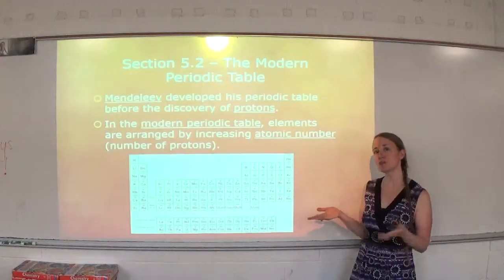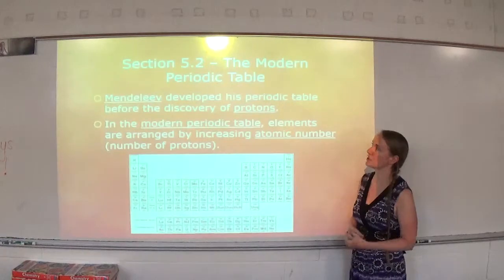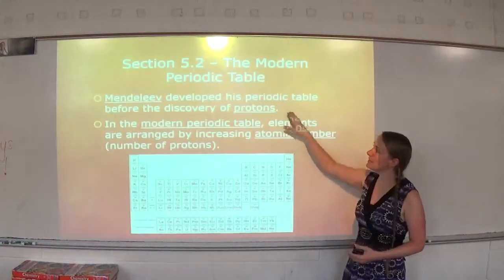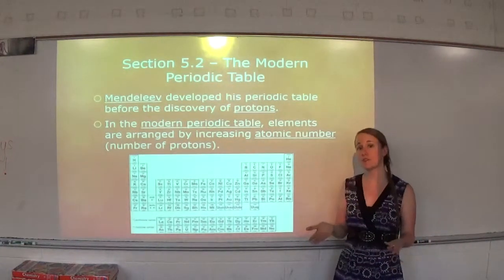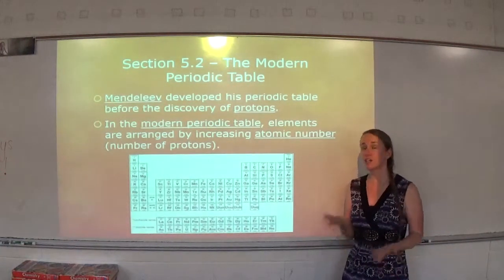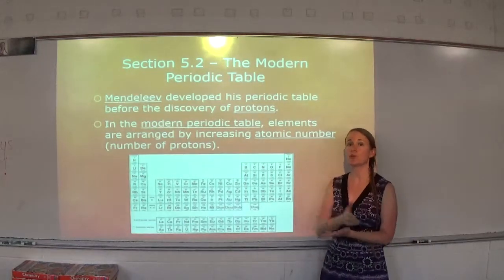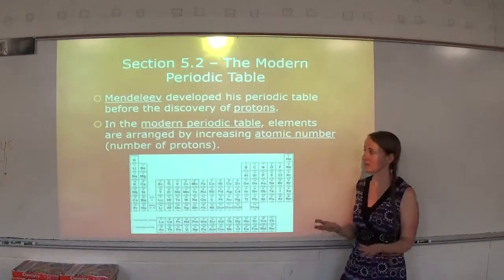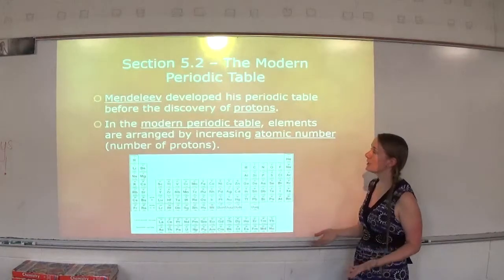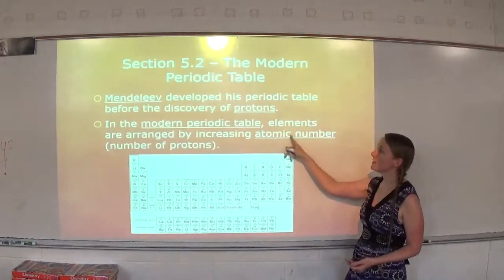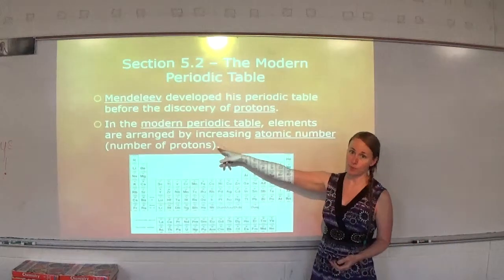There's a little bit of difference between the two, but they're pretty similar actually. Mendeleev developed his periodic table before the discovery of protons, so he put his periodic table in order of atomic mass. In the modern periodic table, elements are arranged by increasing atomic number, which is number of protons.